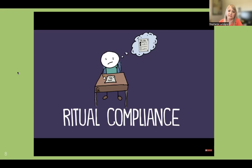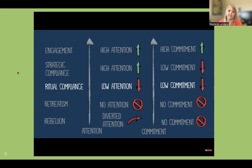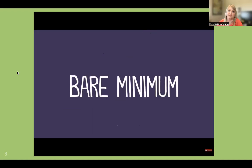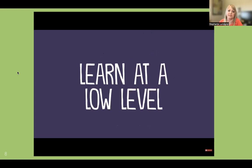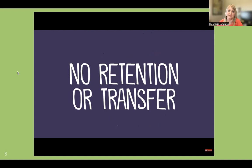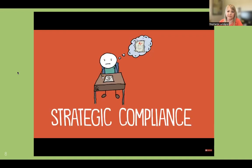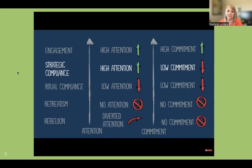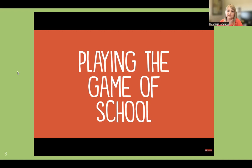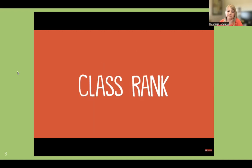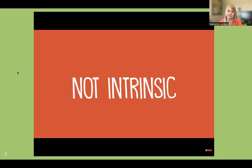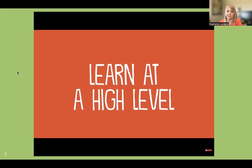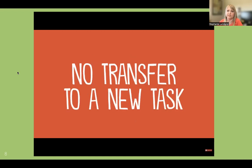At the next level, you have ritual compliance — both low attention and low commitment. Unlike retreatism, a ritually compliant student doesn't completely check out, but instead does the bare minimum to avoid confrontation. This student will learn at a low level, and the task will not be retained over time. Next is strategic compliance. Often this looks like engagement because the student might be performing at a high level, but it's not. The student has high attention on the task but low commitment. This is the student playing the game of school — focused on grades, parental approval, rewards, and class rank. The learning isn't intrinsically rewarding, and as a result, this student will often learn at a high level but fails to retain the learning over time or transfer it to a new context.